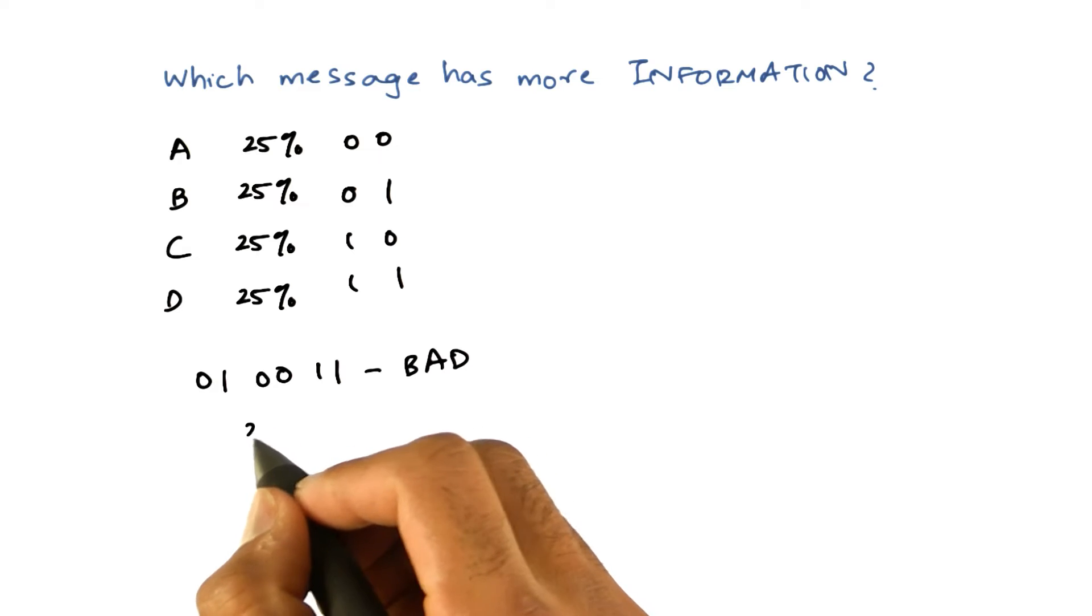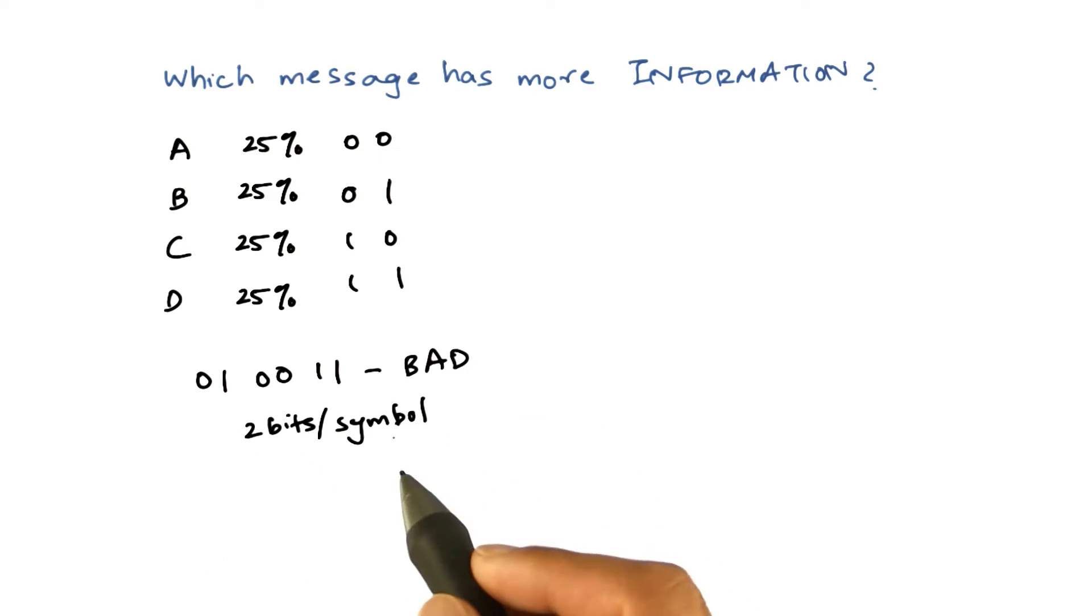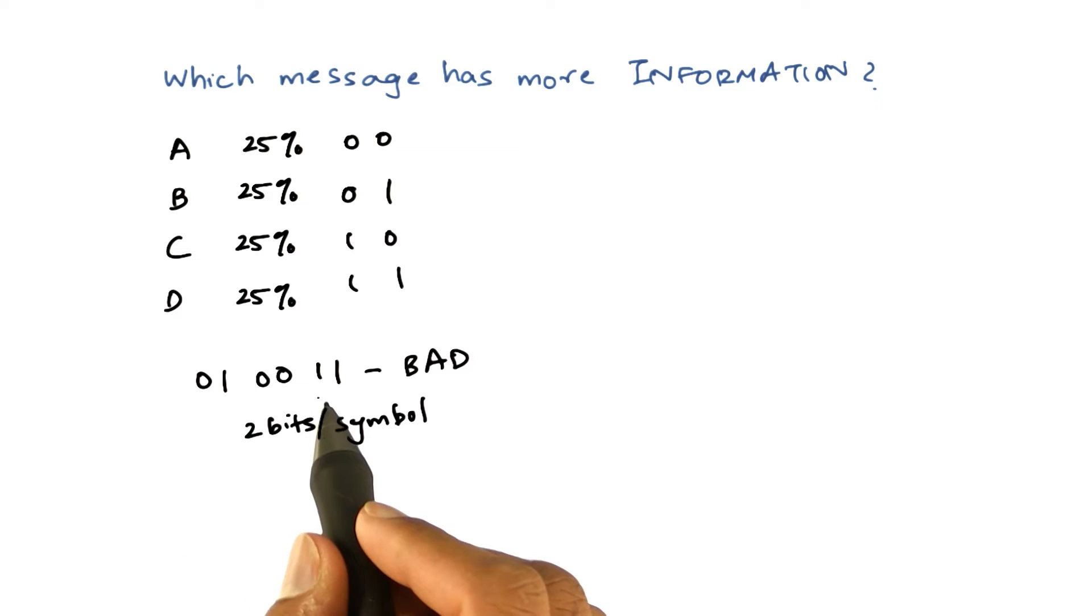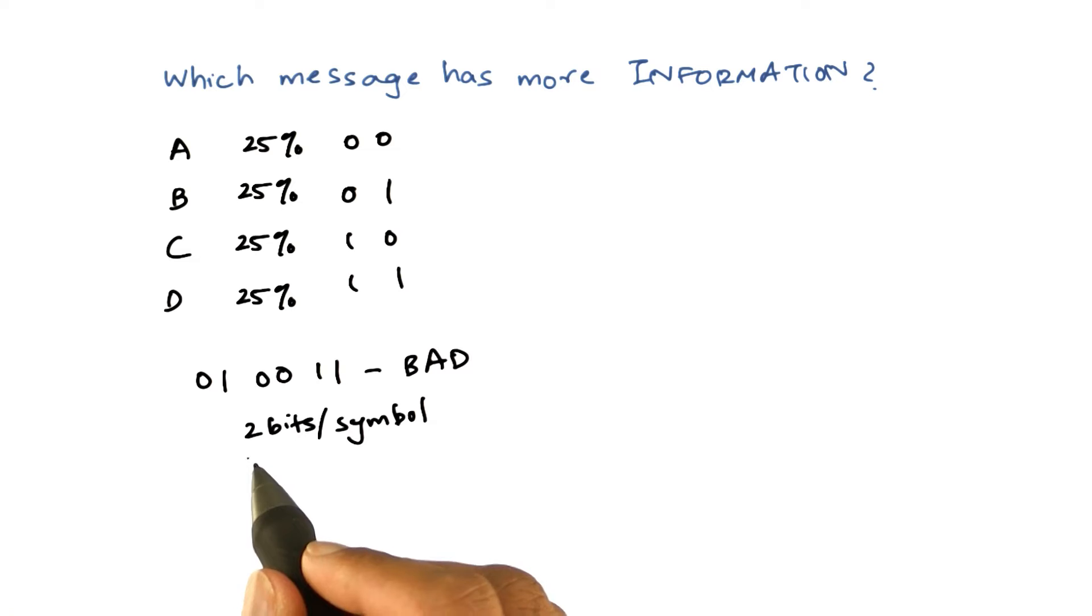So basically, we require two bits per symbol. Another way to look at this sequence is that you need to ask two questions to at least recognize one symbol. So two bits per symbol also means that you have to ask two yes or no questions per symbol.